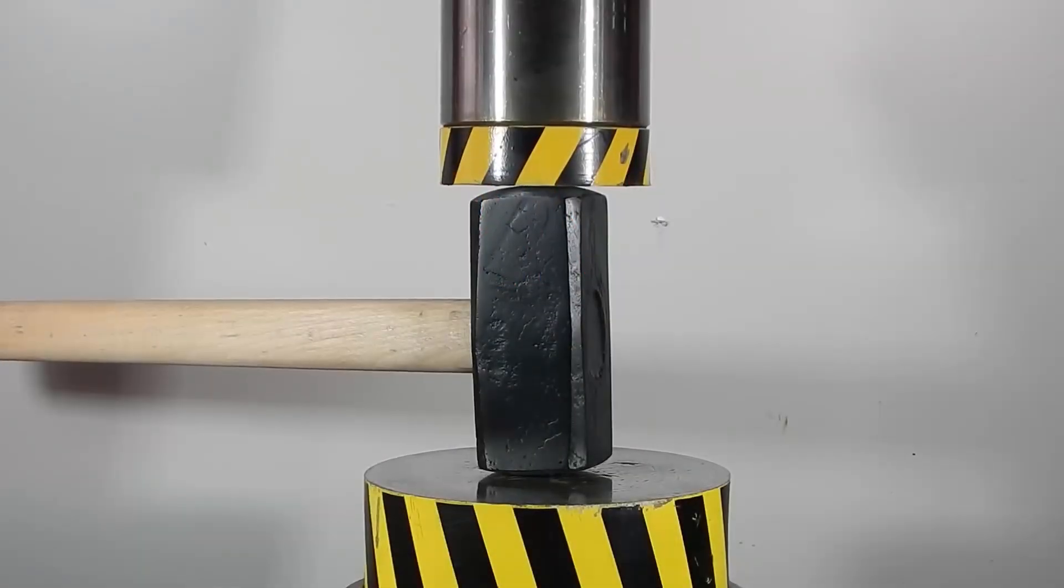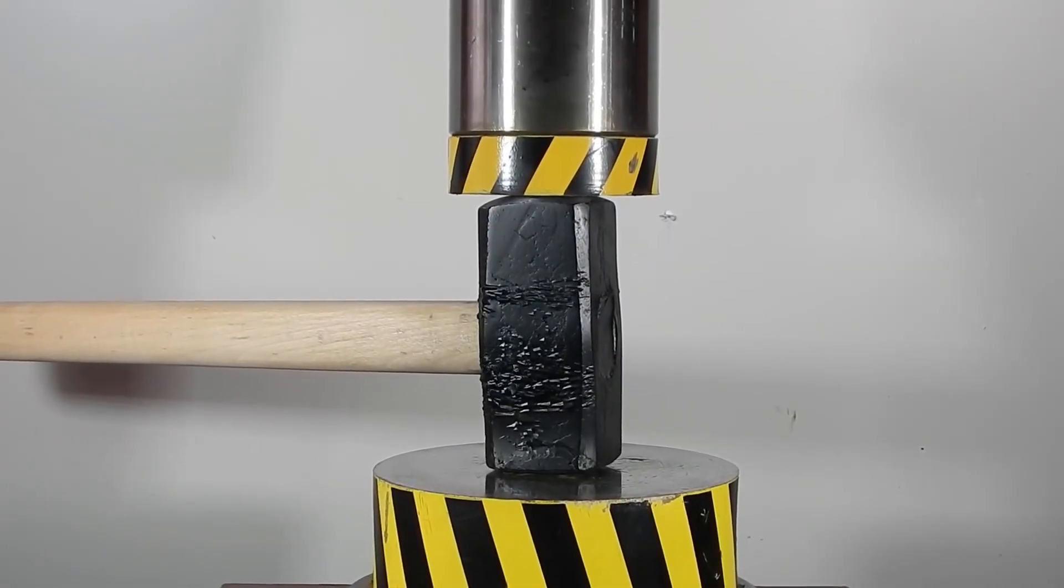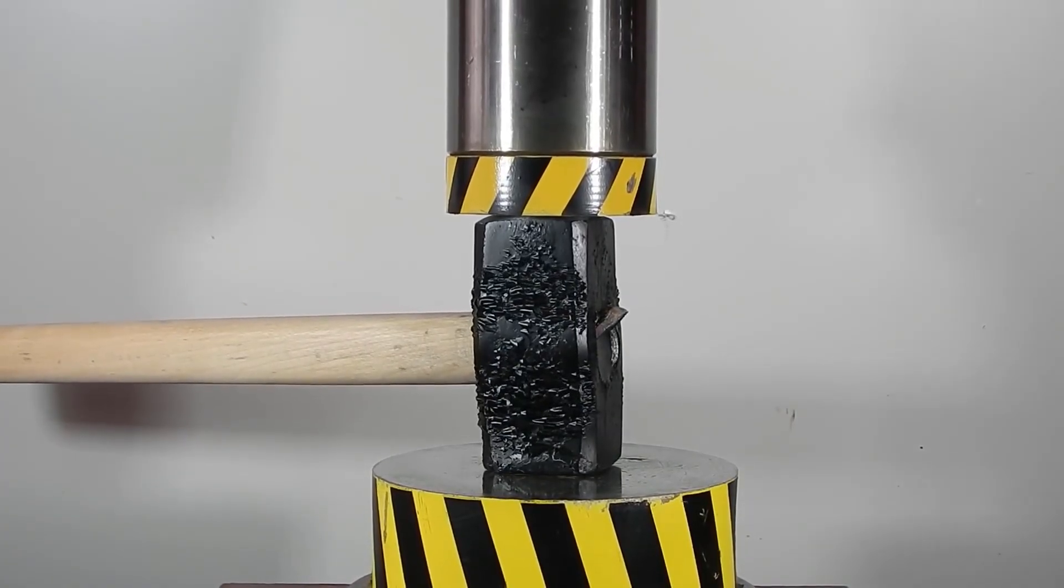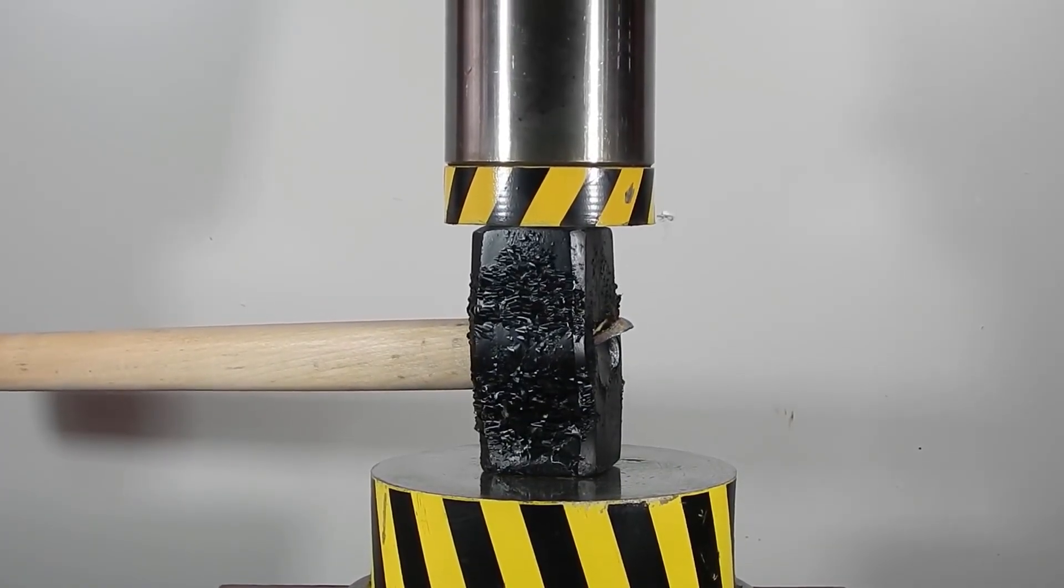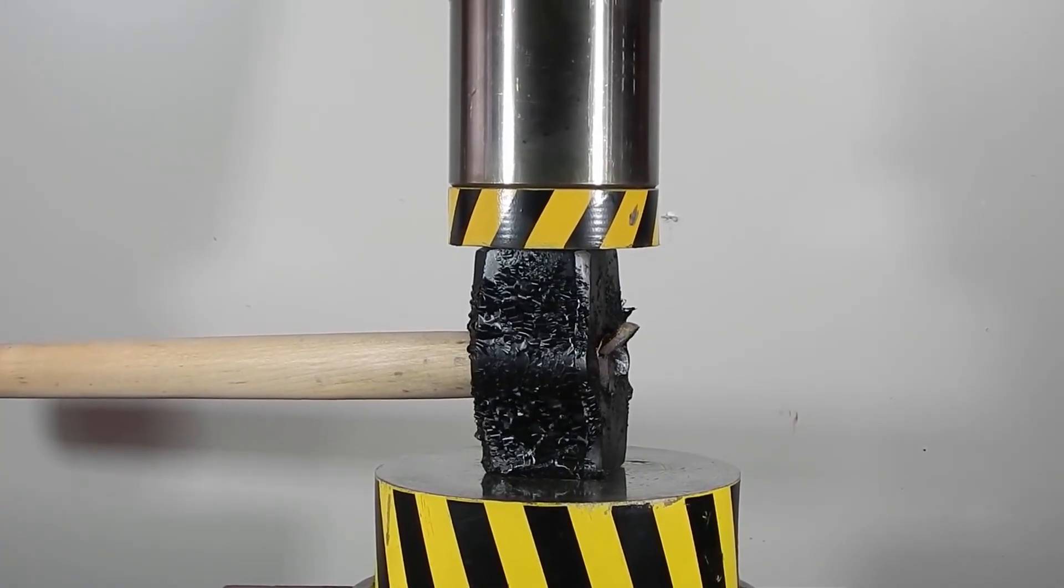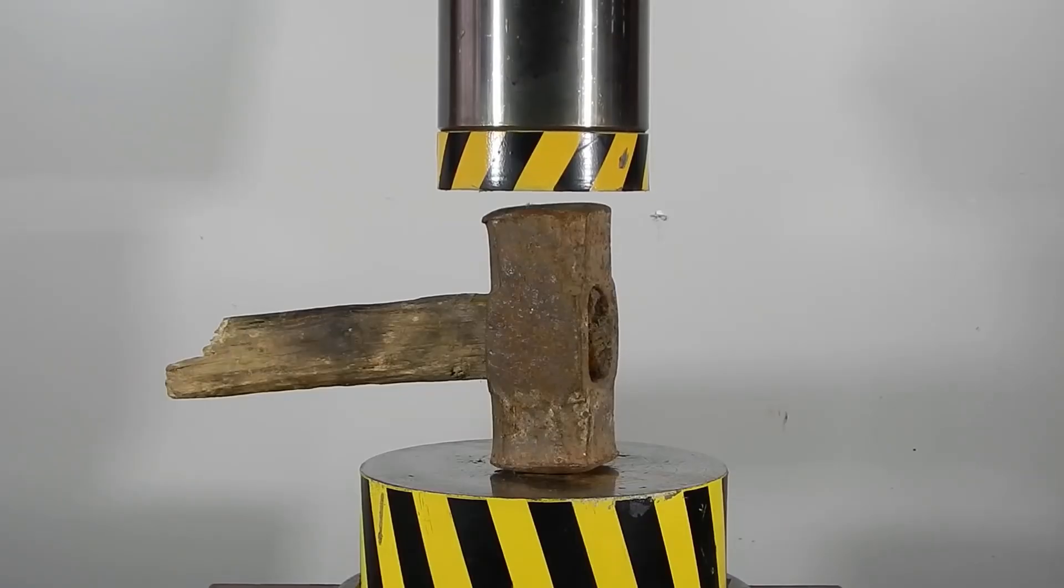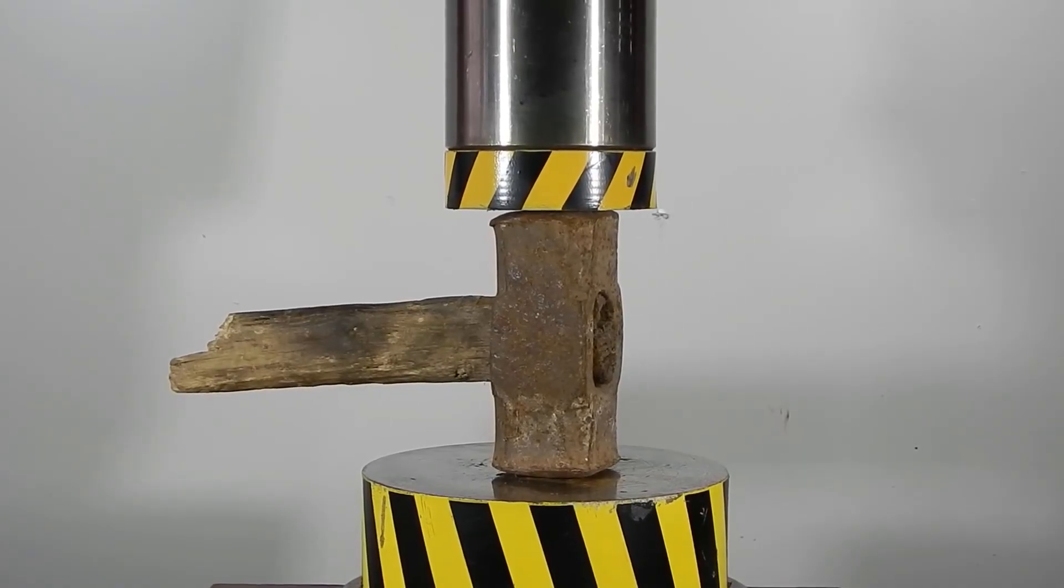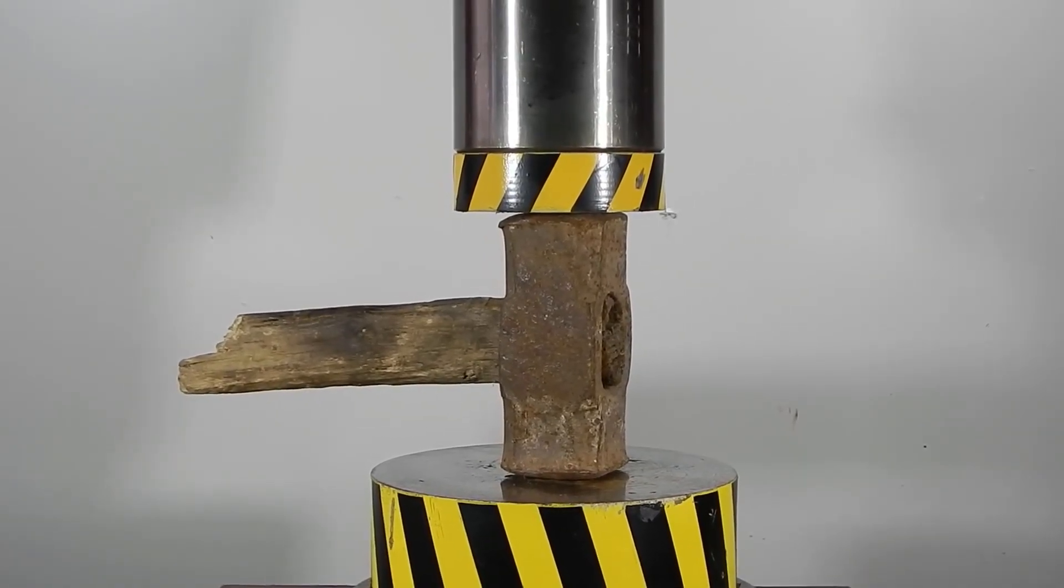Once, with the help of a 100-ton hydraulic press, we tested the strength of a Soviet sledgehammer and a sledgehammer from the Dollar Tree. The Chinese sledgehammer began to give up with a load of 50 tons. The Soviet one, however, withstood the entire 100-ton load applied. Despite approximately the same weight and shape, they behaved very differently.